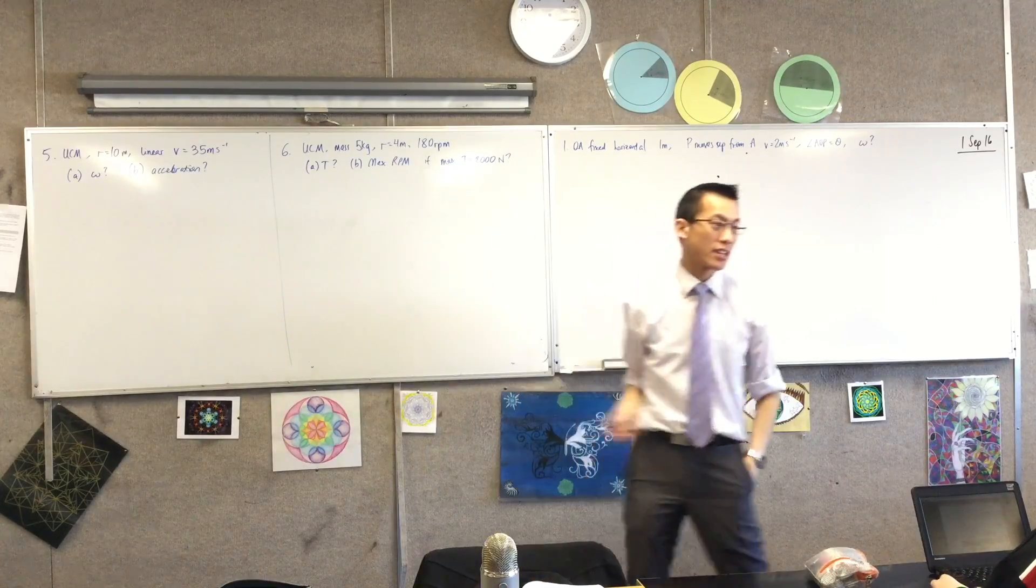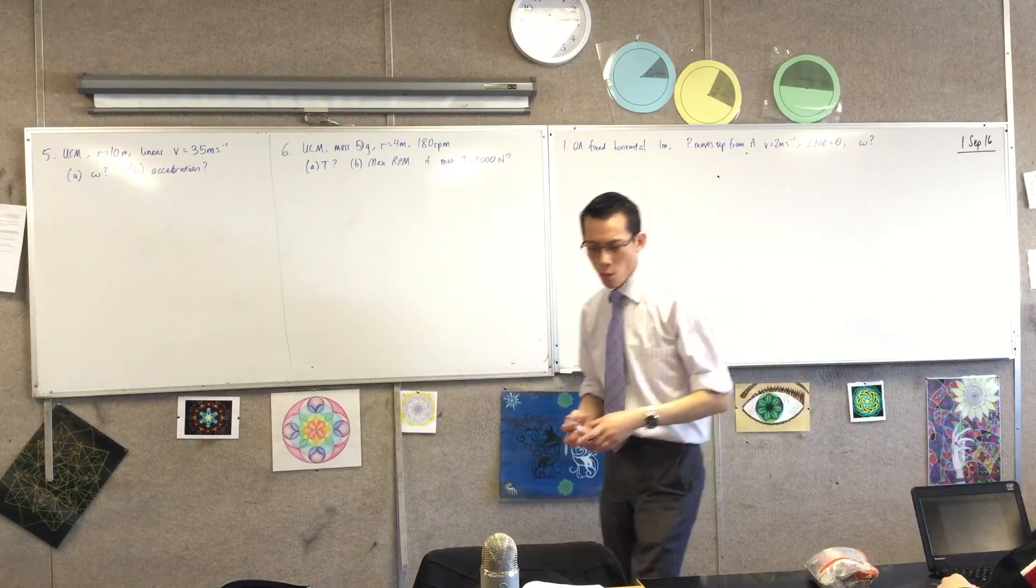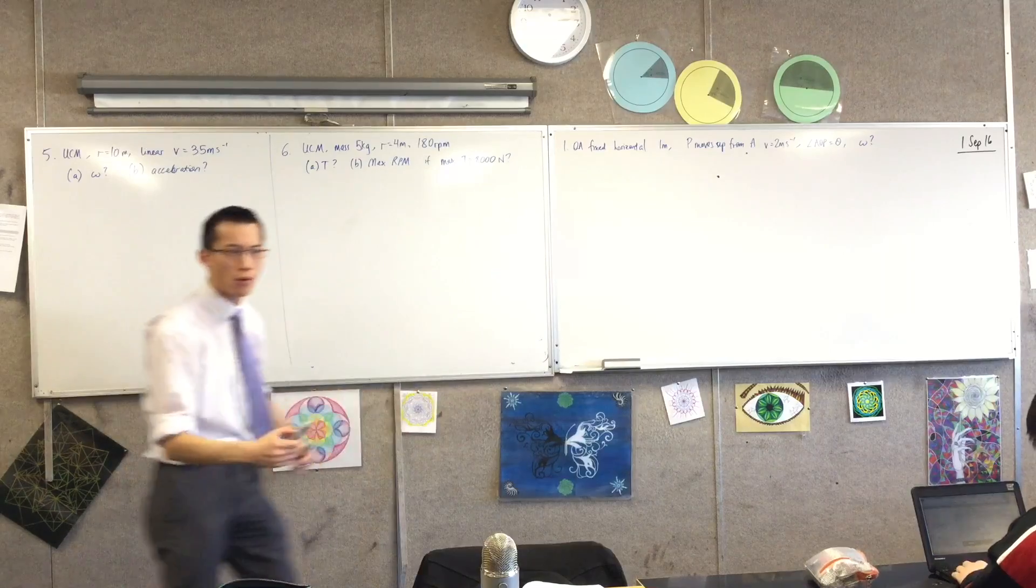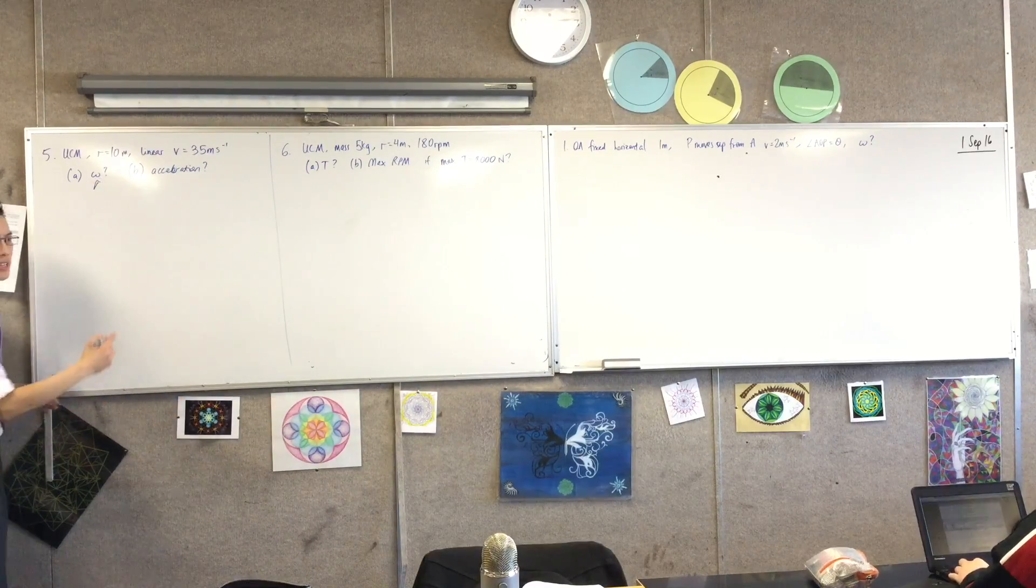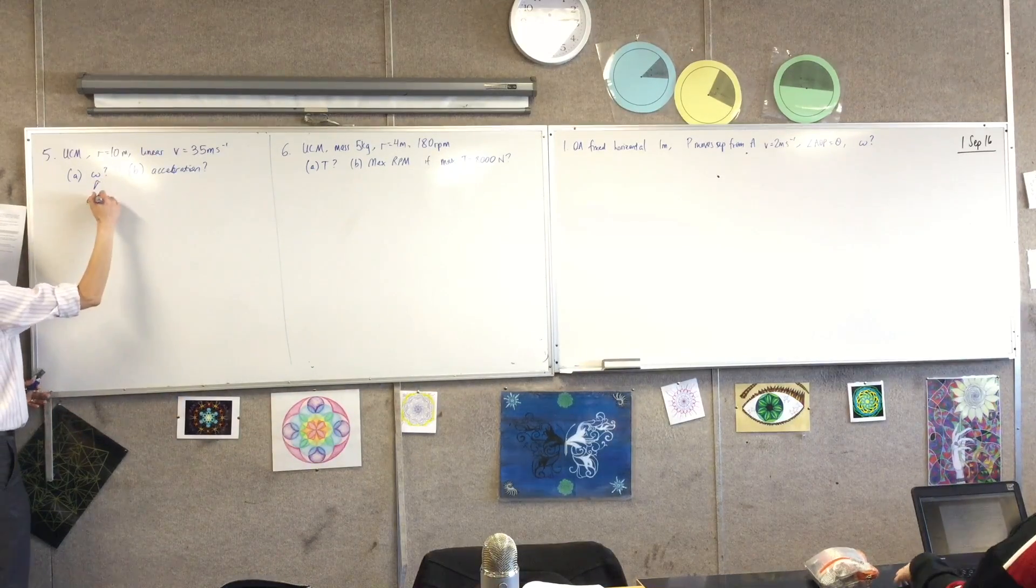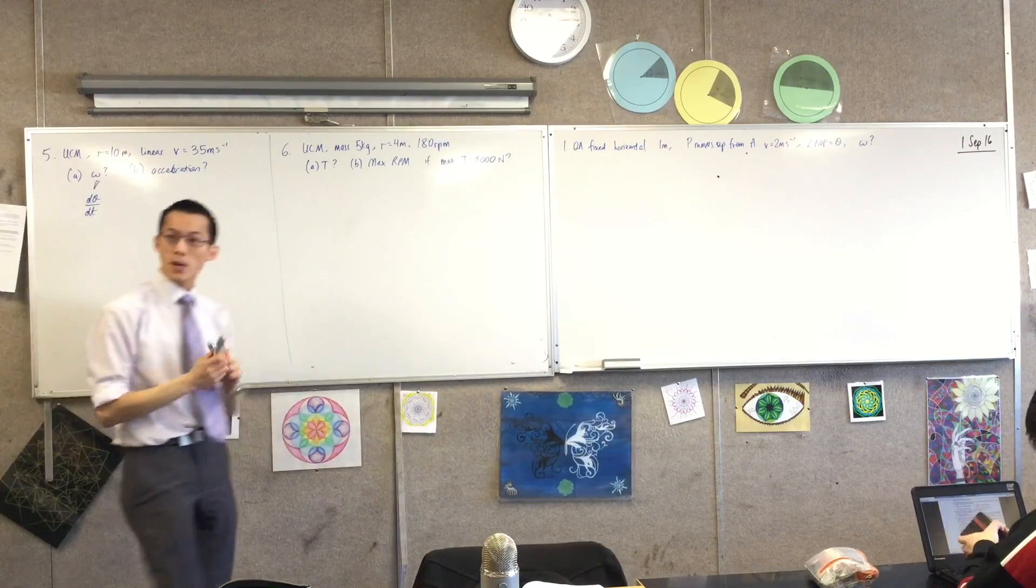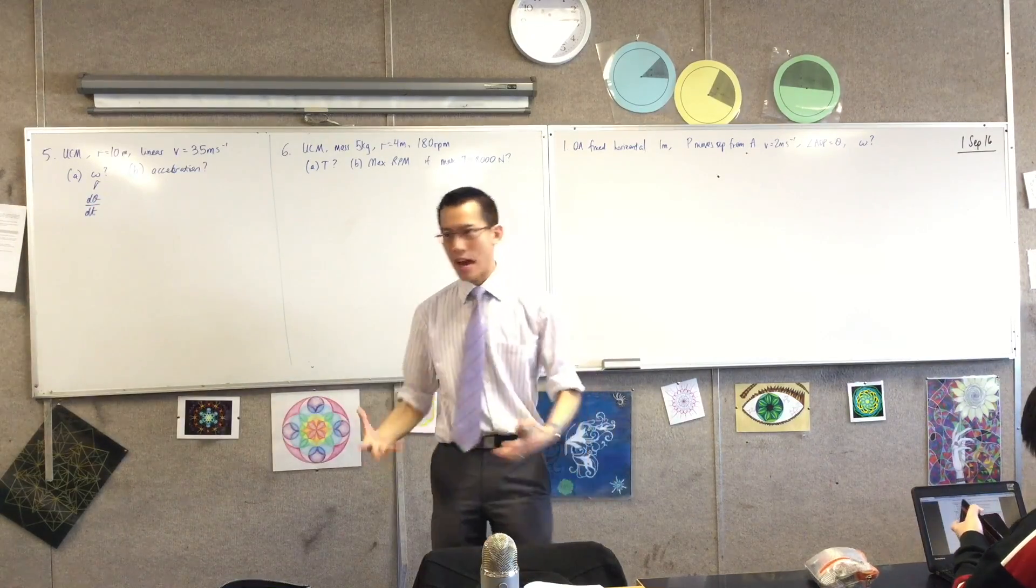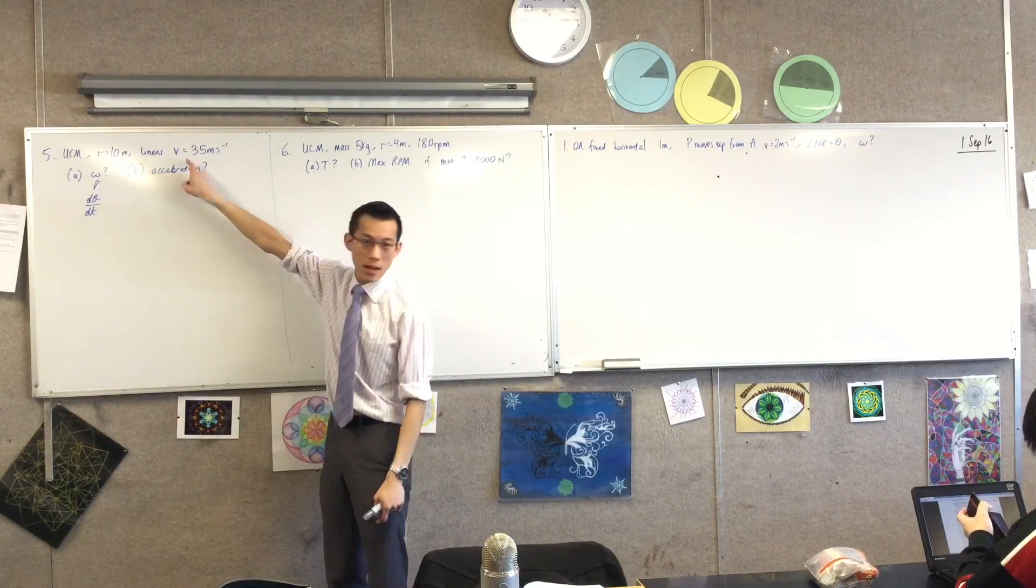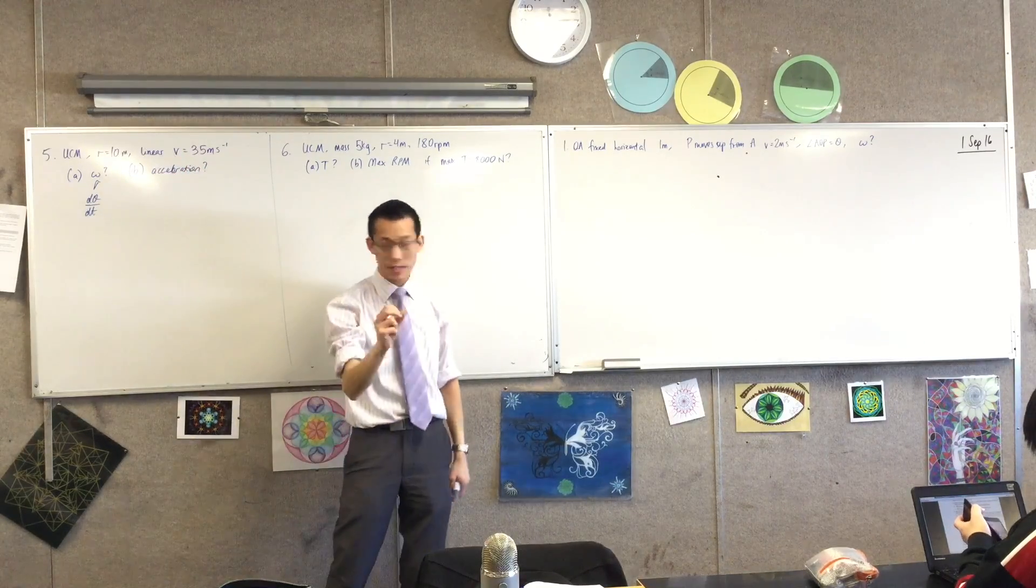I want to get to angular velocity, omega, right? What was omega shorthand for? What is it actually? It's d theta on dt. Very good. It's how the angle is changing with respect to time. Okay? So that's where I'm headed. I don't have anything in terms of angles, but I do have this guy. Okay? So this is linear velocity.